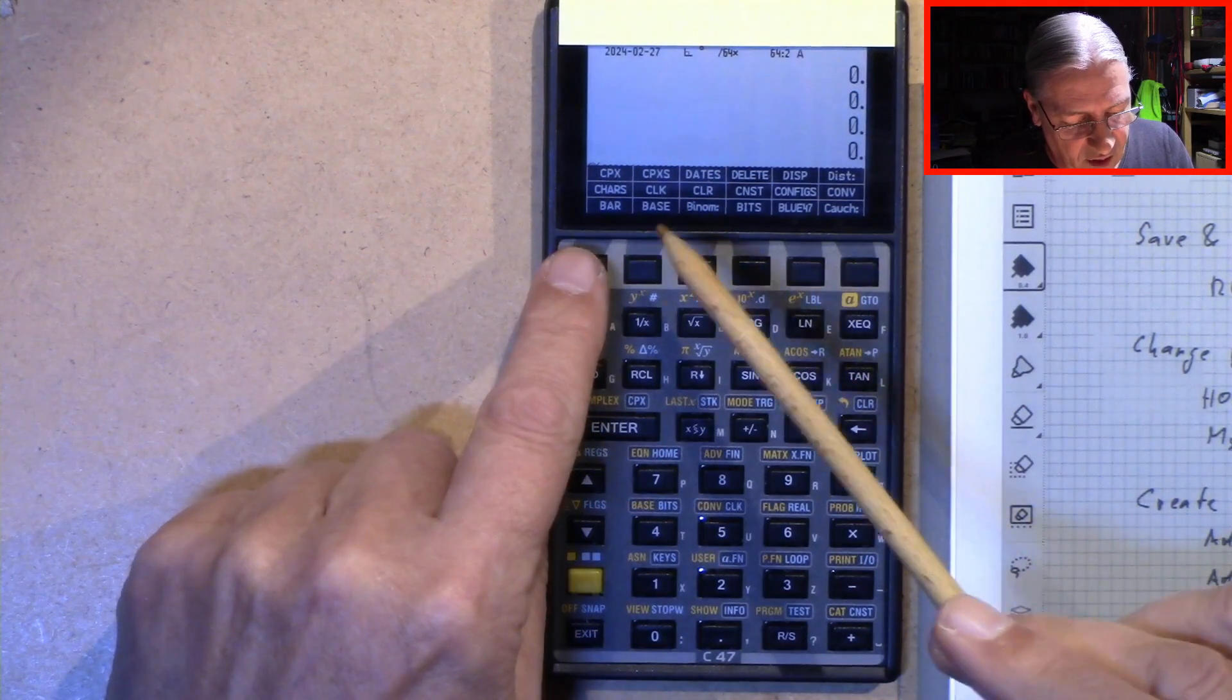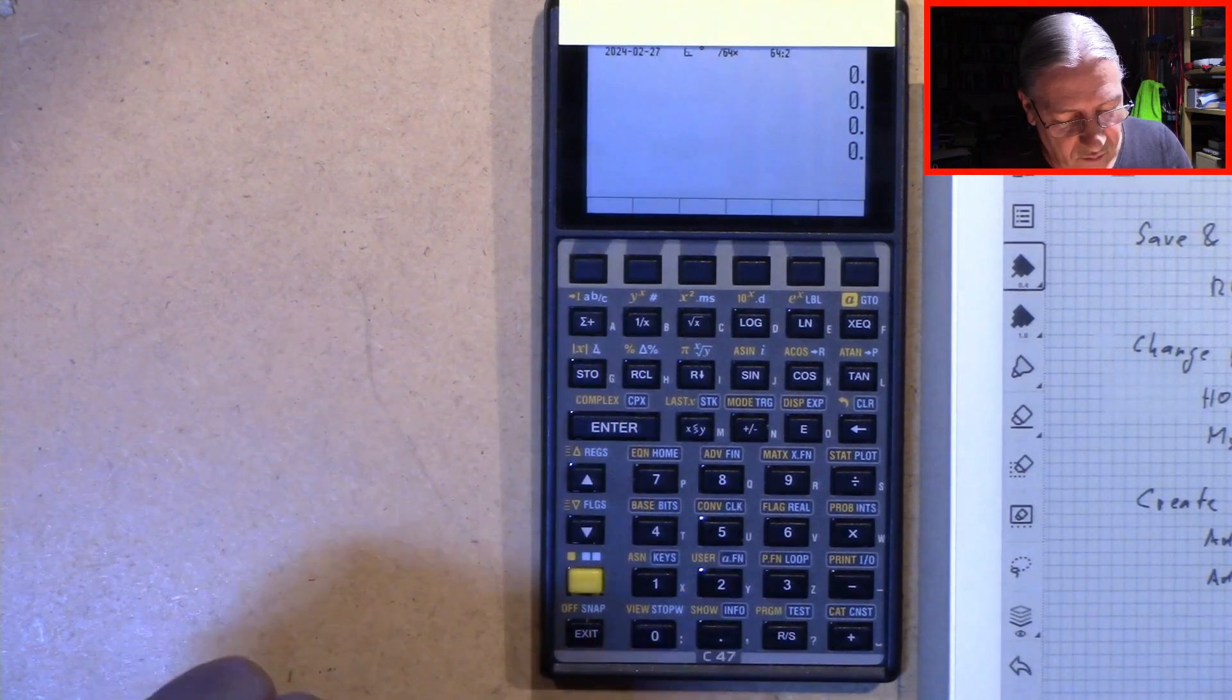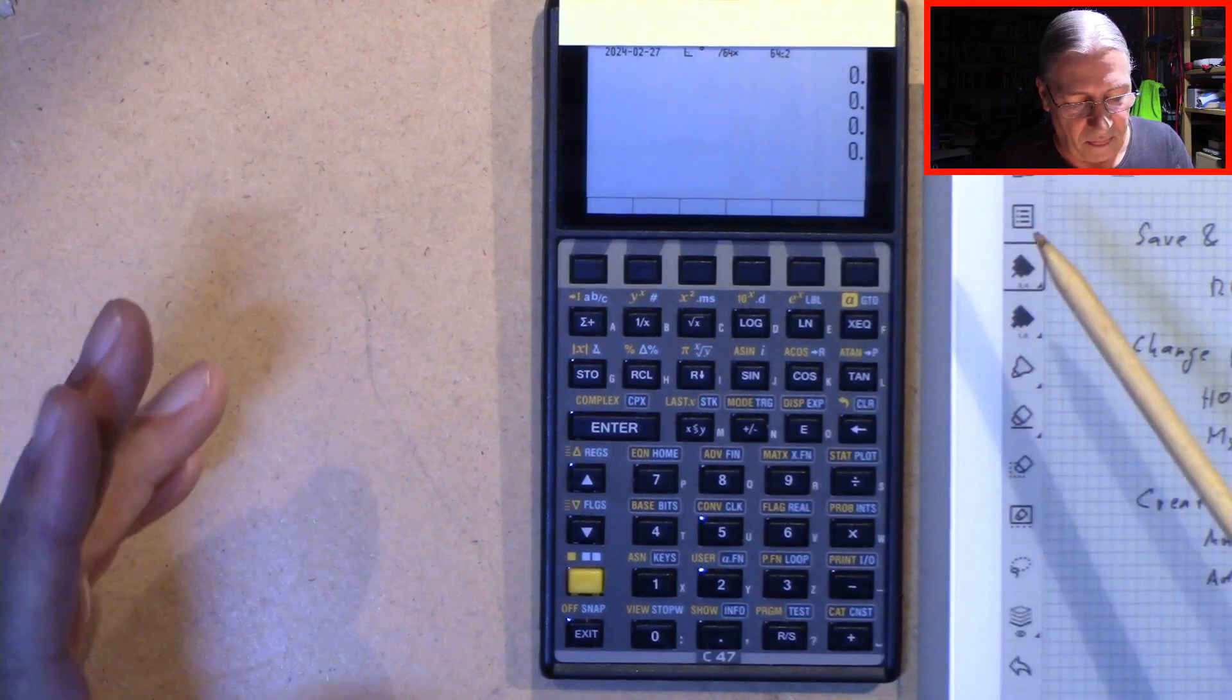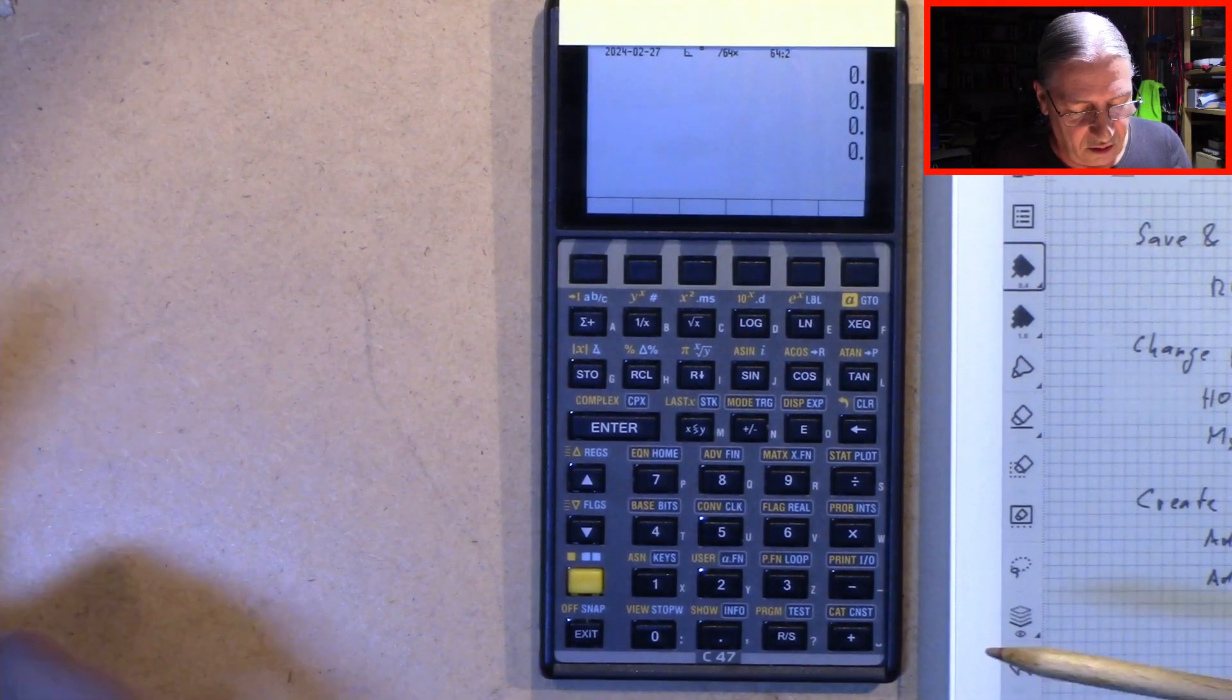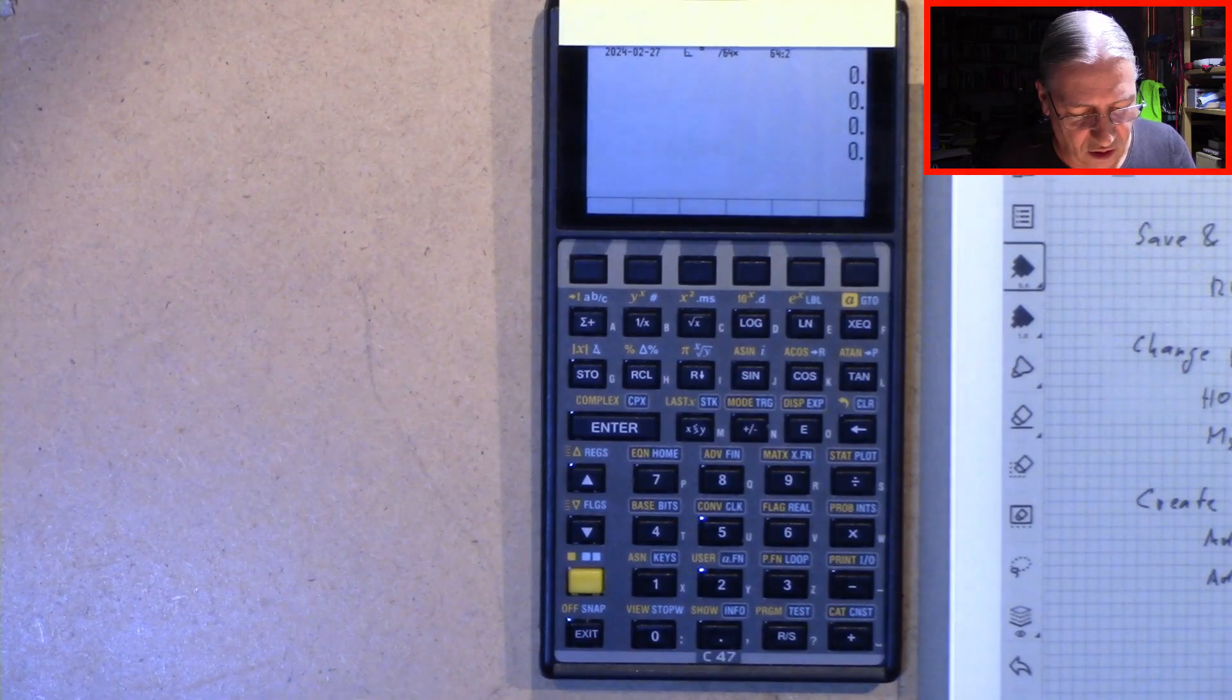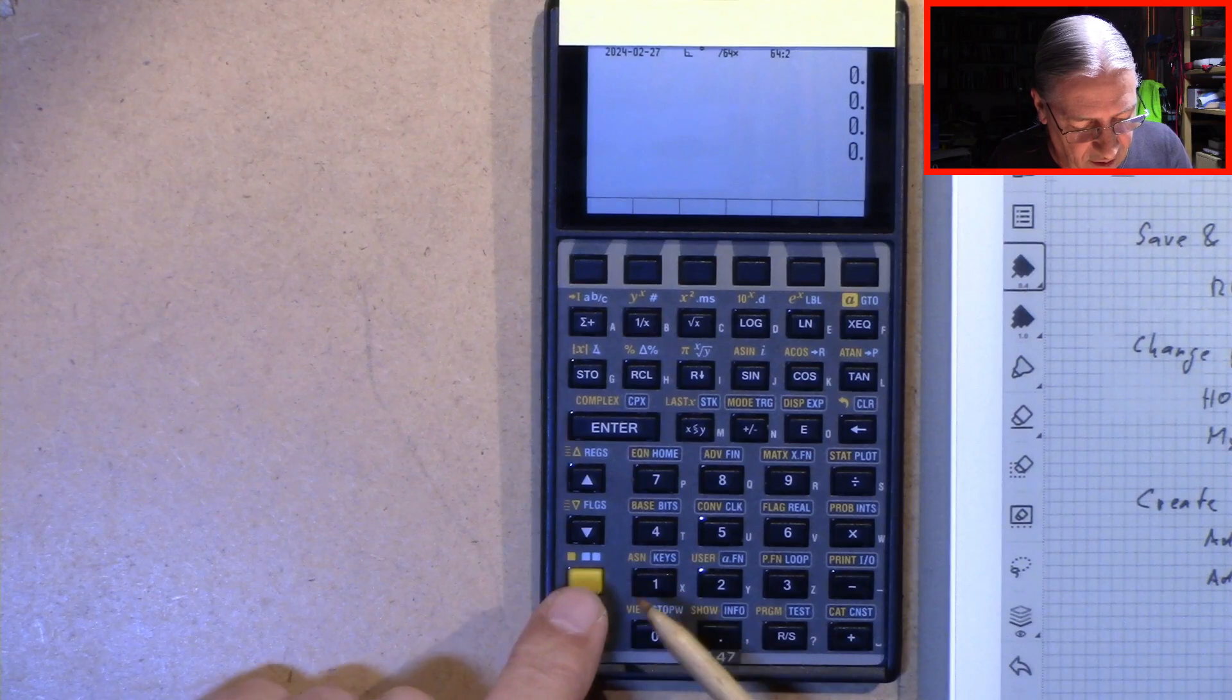So let's tap bar here. And now we see our empty menu. And we have to put some stuff into it, right? So for instance, for the sake of simplicity, I take the functions which are easy to enter here.